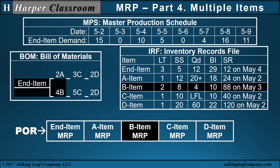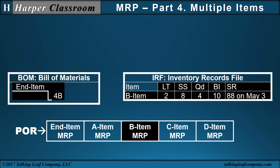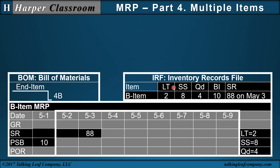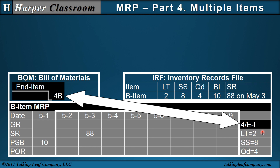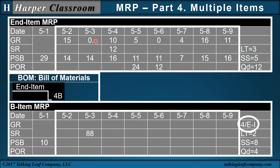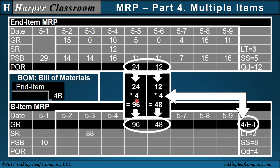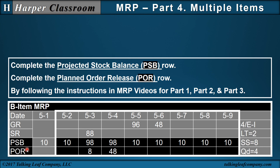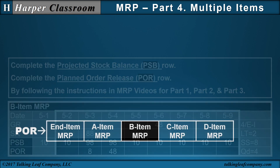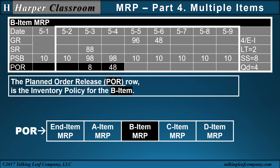Now the B item. The B item uses the Bill of Materials information and the B item row in the Inventory Records File. We copy the lead time, safety stock, and lot size discipline, the beginning inventory, and the scheduled receipt of 88 on May 3rd. The multiplier from the Bill of Materials is 4 (four legs per end item). Going to the end item's planned order release row: 4 times 24 is 96, and 4 times 12 is 48. So the gross requirements for the B item are 96 and 48. The planned order release row is the inventory policy for the B item.